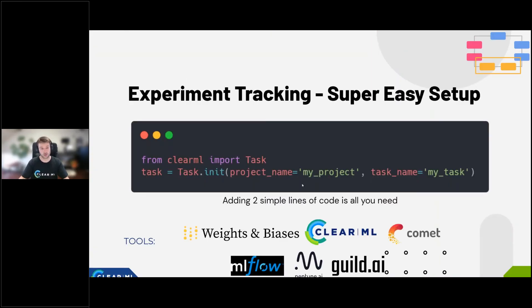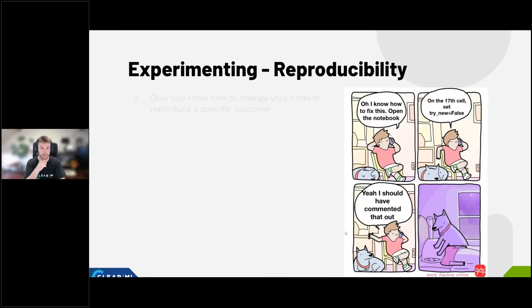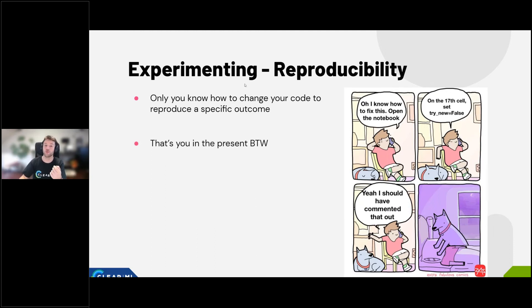The recap: super easy setup, essentially just two lines of code. There are many tools — Weights & Biases, MLflow, Neptune, Guild, and us — all requiring very little code changes. Now the second part: reproducibility. Only you know how to change your code and reproduce a specific outcome. That's where things get powerful. You from two weeks or two months ago don't remember which parameter you had to set to false to rerun everything.